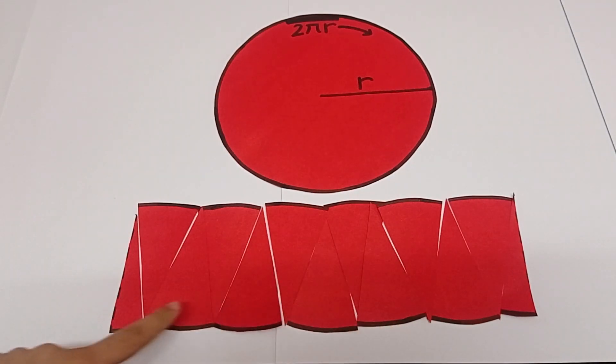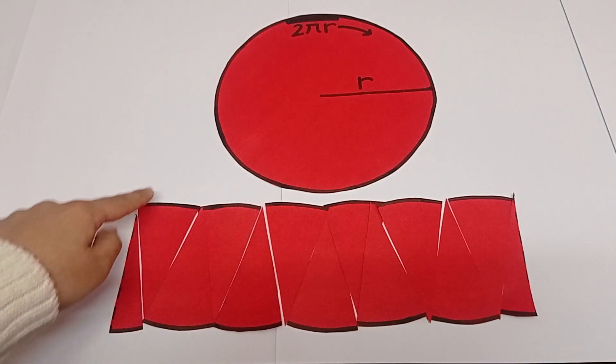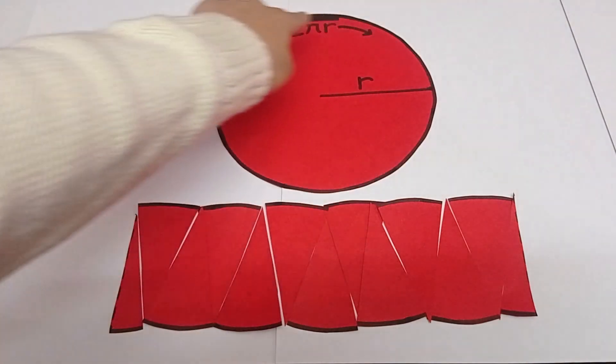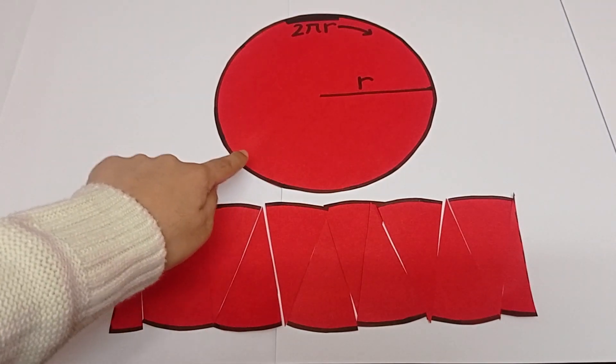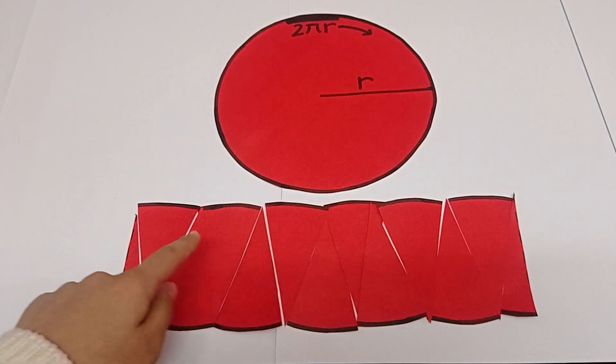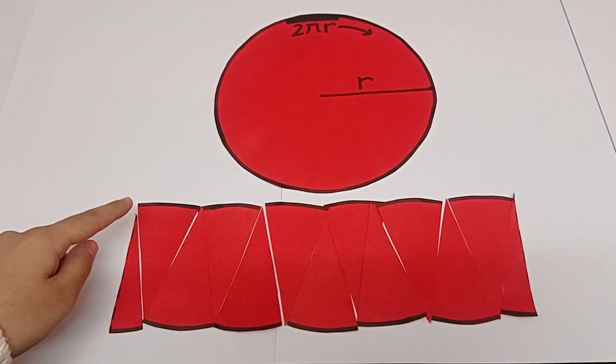We know that these two opposite sides of the rectangle together measure the same as the circumference of the circle. So, the length of the rectangle becomes half of 2 pi r, i.e. pi r.